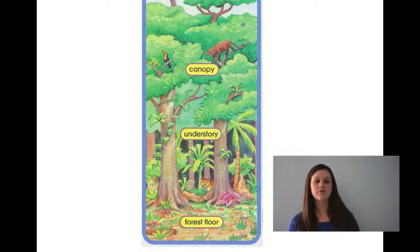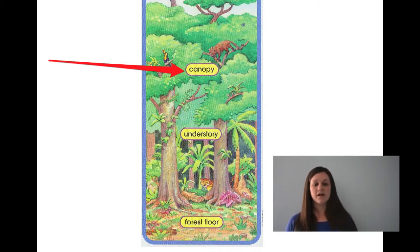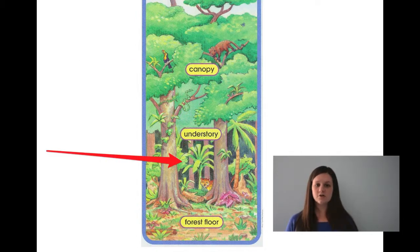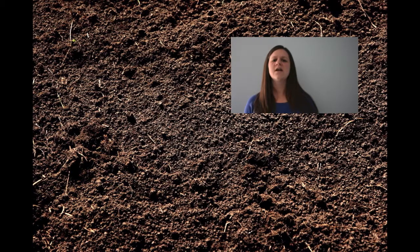Now there are three levels to the rainforest. The top layer, which is called the canopy, the middle layer, which is the understory, and the very bottom layer is called the forest floor because it's the floor of the forest.